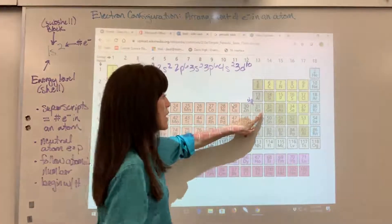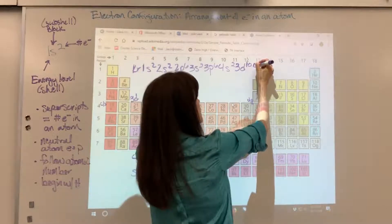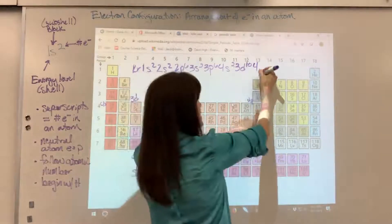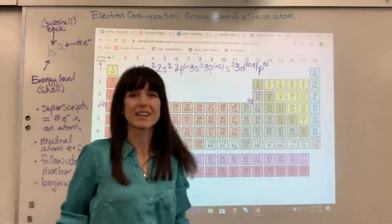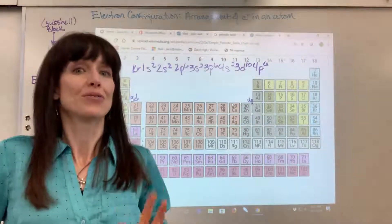Now let's go to gallium, atomic number 31. This is the fourth energy level, P block. And I want to go to krypton, 1, 2, 3, 4, 5, 6. There we go. That is the electron configuration for krypton.